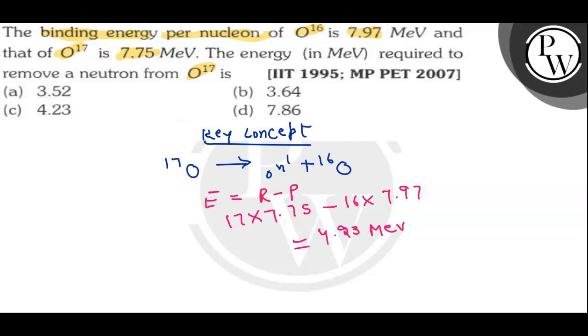So how much energy we need? Energy required to remove a neutron is 4.23 MeV, which suggests that option C is the correct answer. I hope you understand the question. Wish you luck.